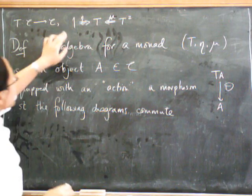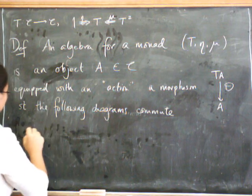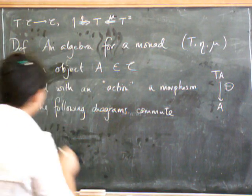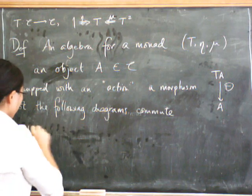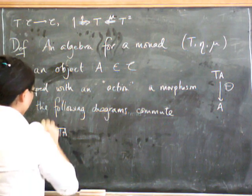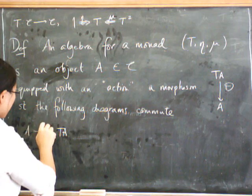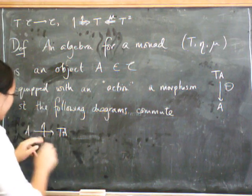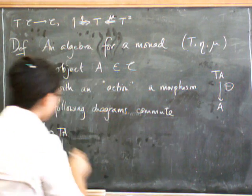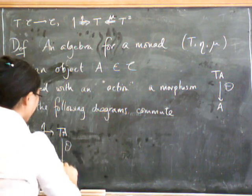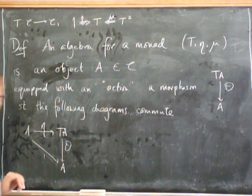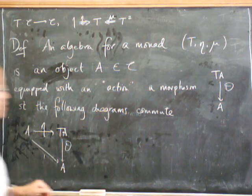First of all, there's got to be something to do with eta. If you start on object A, you can go from A into T of A using eta, and then after that you can do the algebra action theta and get back down to A again — and that's supposed to be the same as doing the identity.